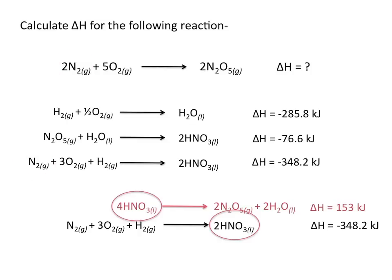You'll also notice in this equation that 2 moles of HNO3 are formed on the product side. Comparing that to the equation we just modified, we have 4 moles of HNO3 on the reactant side. If you look at the reaction of interest, the compound HNO3 doesn't appear anywhere in that equation.